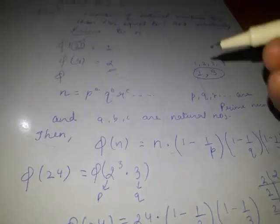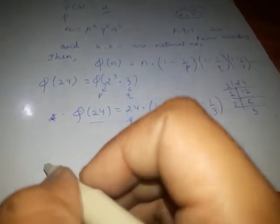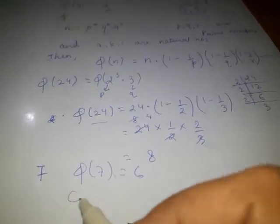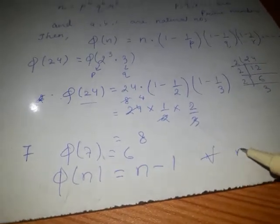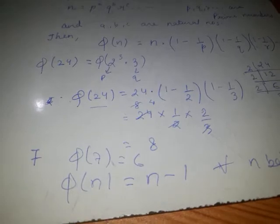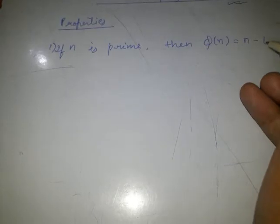We can also say that if any number n is prime, say 7, then phi 7 equals 6, means phi n equals n minus 1 for all n being prime. So here are some properties of Euler's phi function. The first property as I have discussed: if n is prime, then phi n equals n minus 1.